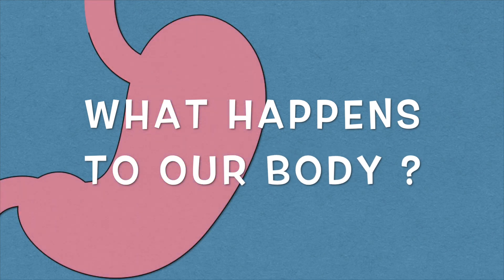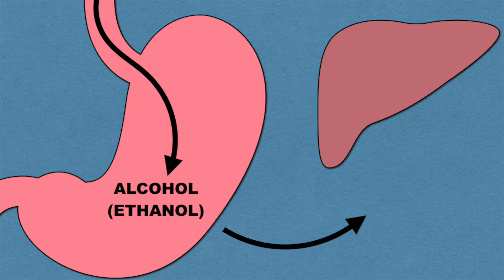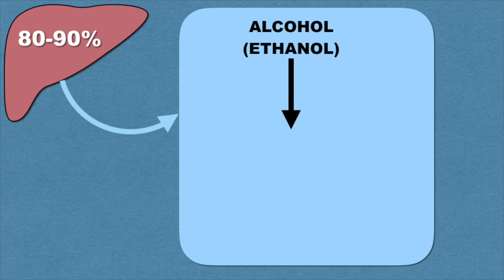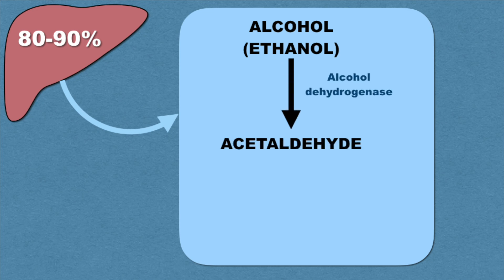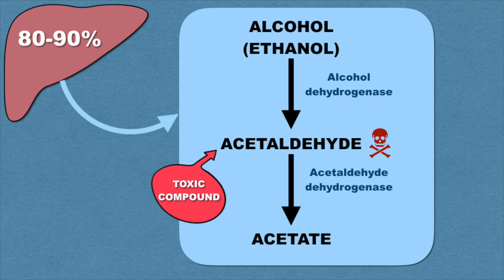First, let us understand what happens to our body when we drink alcohol. The ethanol compound in alcohol is readily absorbed in our body — almost 80-90% of the ethanol is metabolized in our liver. The enzyme alcohol dehydrogenase in the liver transforms ethanol into acetaldehyde, an intermediate toxic compound harmful for our body. However, acetaldehyde is generally short-lived and is quickly broken down to a less toxic compound called acetate by another enzyme called aldehyde dehydrogenase.